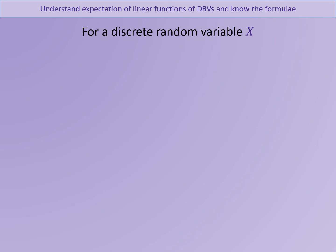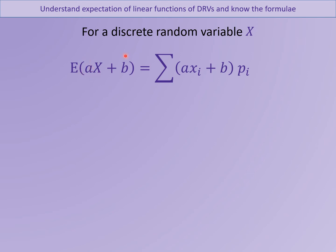We're going to look algebraically at what's going on, and then we'll return to the previous example to see if we can see that happening. If we're trying to find the expected value of AX plus B, this means the X values have all been multiplied by A and have all had B added on — a linear transformation applied identically to all of the X's. For example, they could all have been multiplied by 3 and then had 5 added.